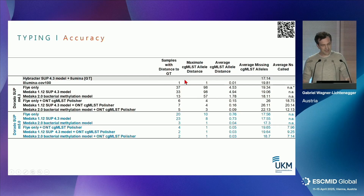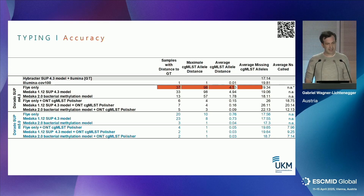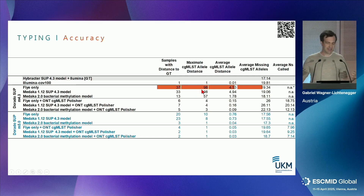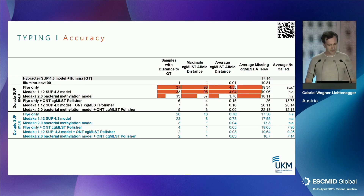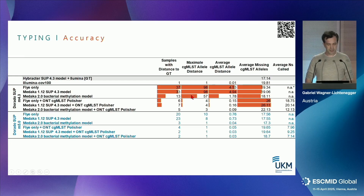The ground truth is on top — the Illumina data. Even for Illumina, out of these 80 samples, we had a single mismatch. With the old base caller and Flye assembly without any polishing, we had 37 samples affected, and the maximum distance from one sample to its ground truth was 98 — that's very high, because the thresholds used for cluster analysis are somewhere between 10 and 20. Polishing improved this somewhat, and the really big improvement came from the bacterial methylation polishing. Applying the cgMLST polisher on top of all three options reduced results to five samples with a maximum distance of three, which is fine.